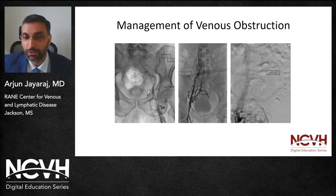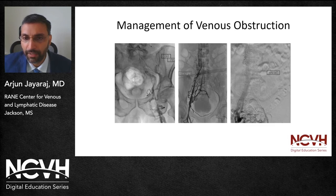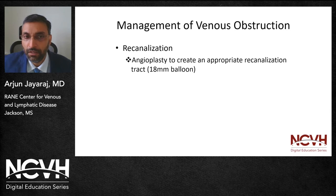At times, one requires the support of an 8 French sheath — usually around a 45 centimeter long sheath — to support the glide catheter. Once you get into the right channel, it leads you all the way to a segment of patent vein. The next step is to create a channel that you can stent into.